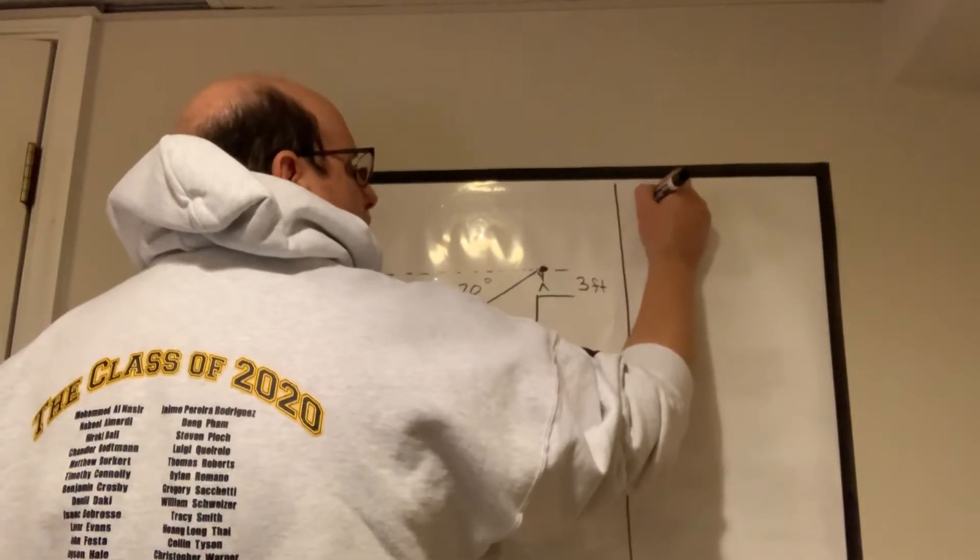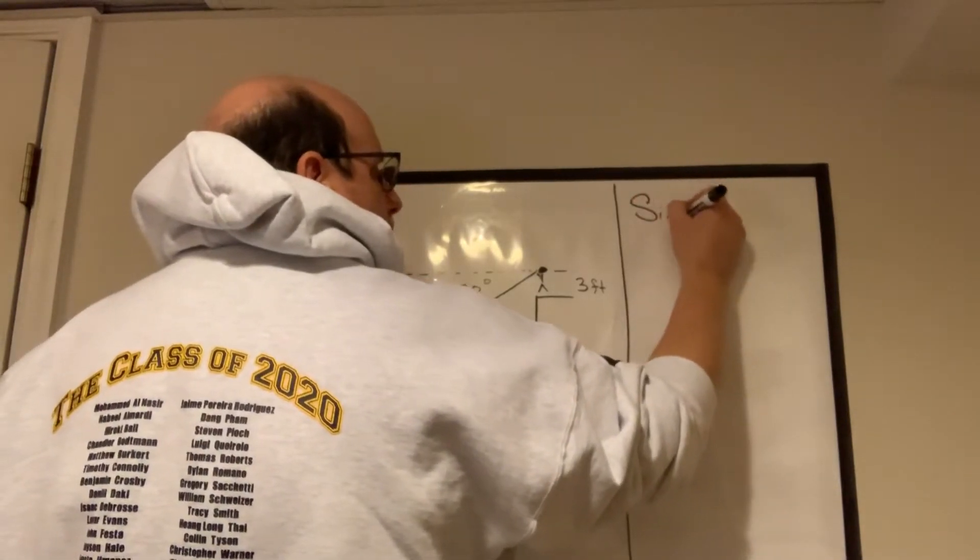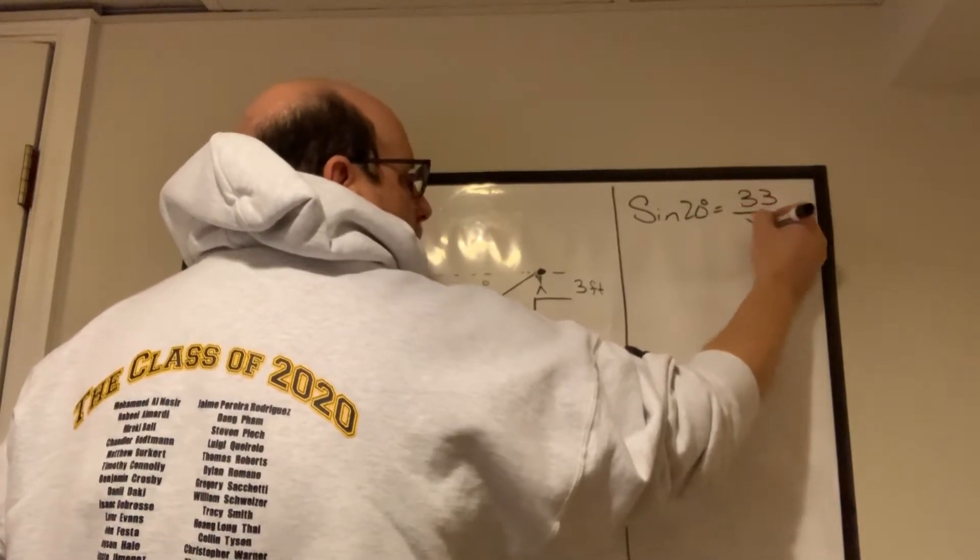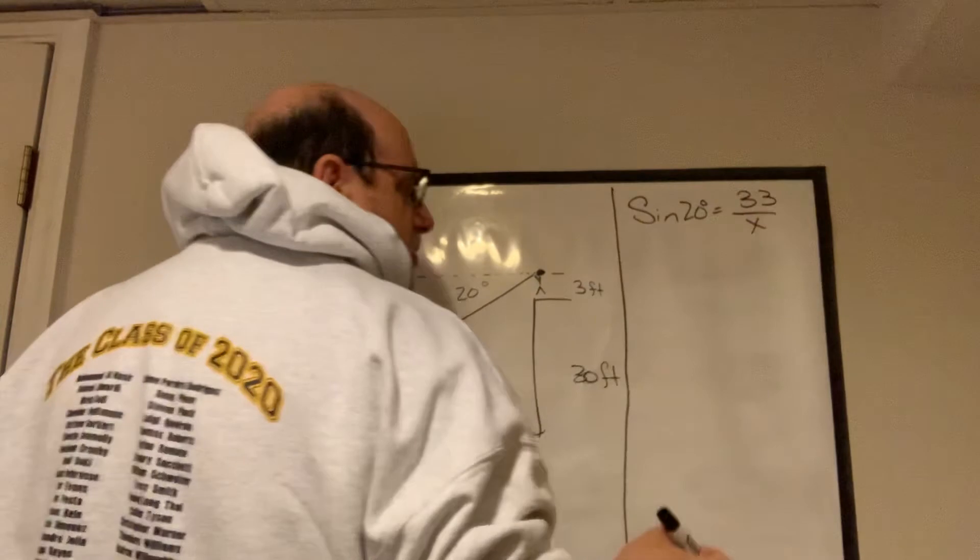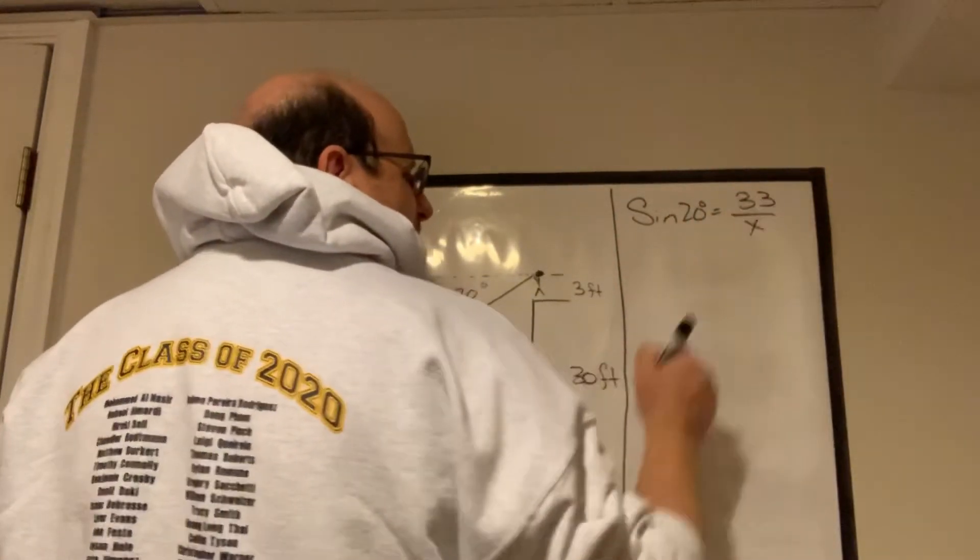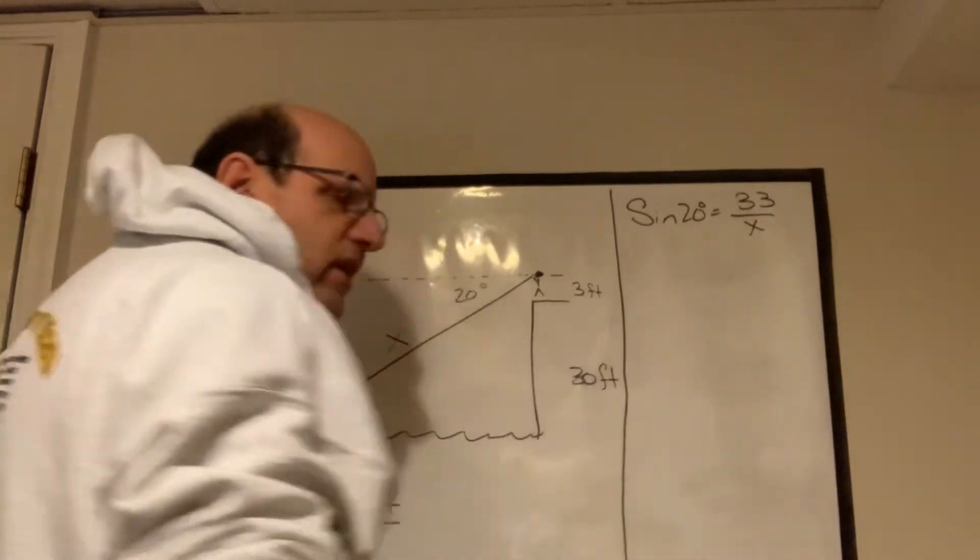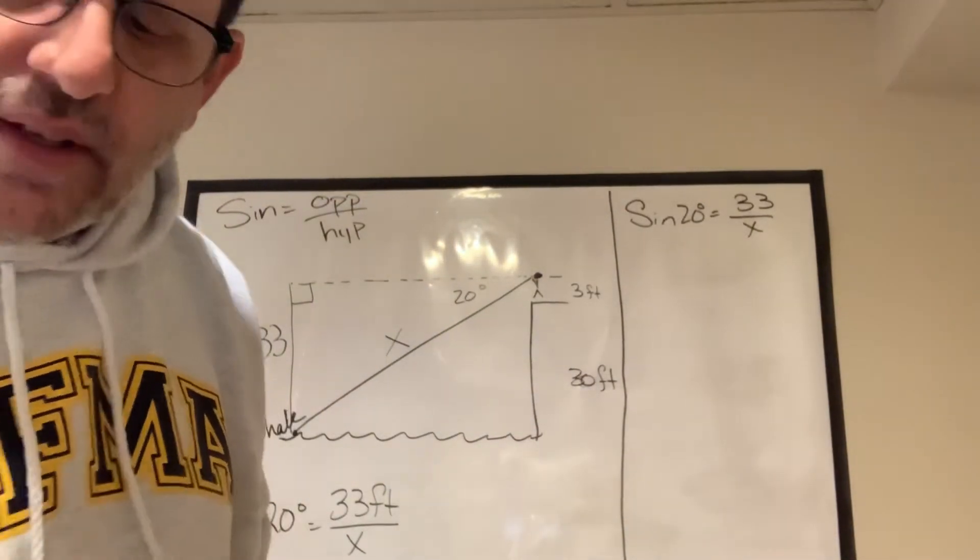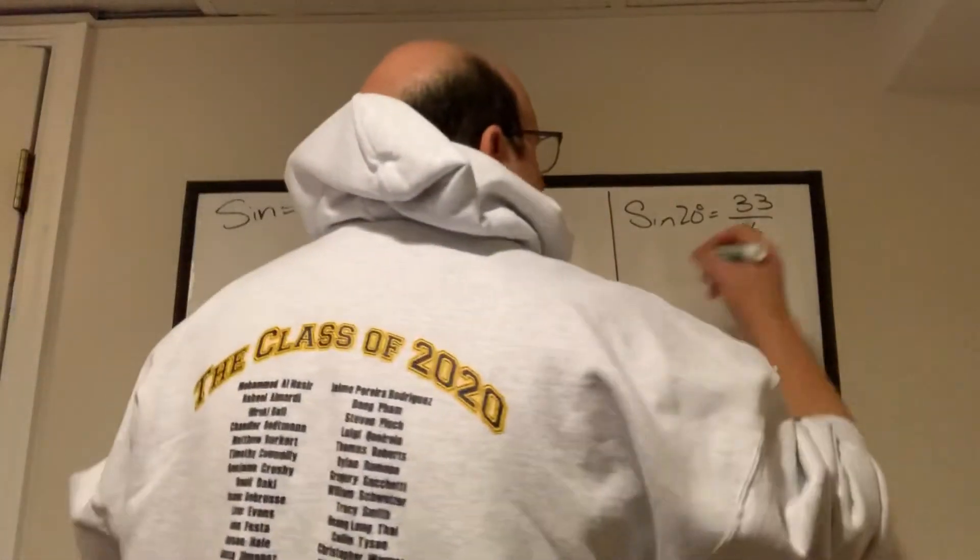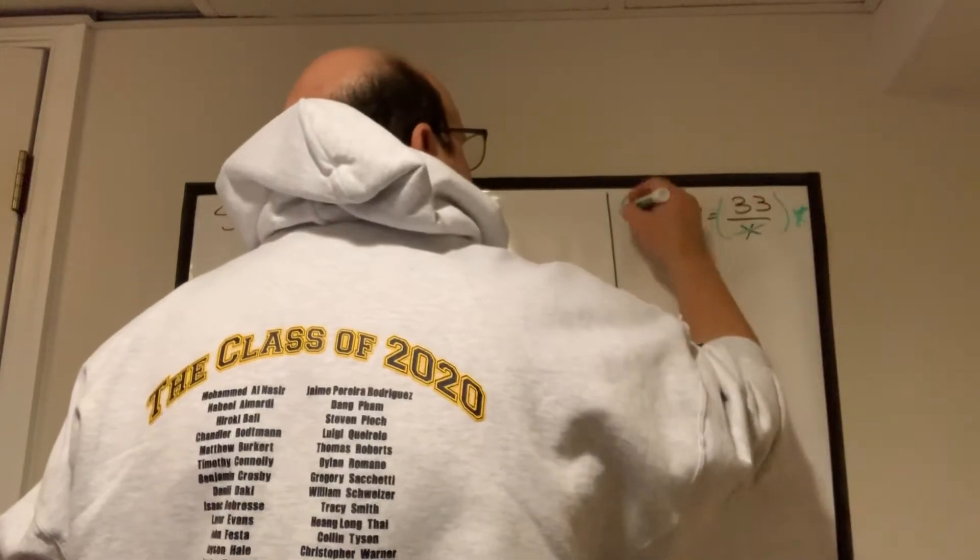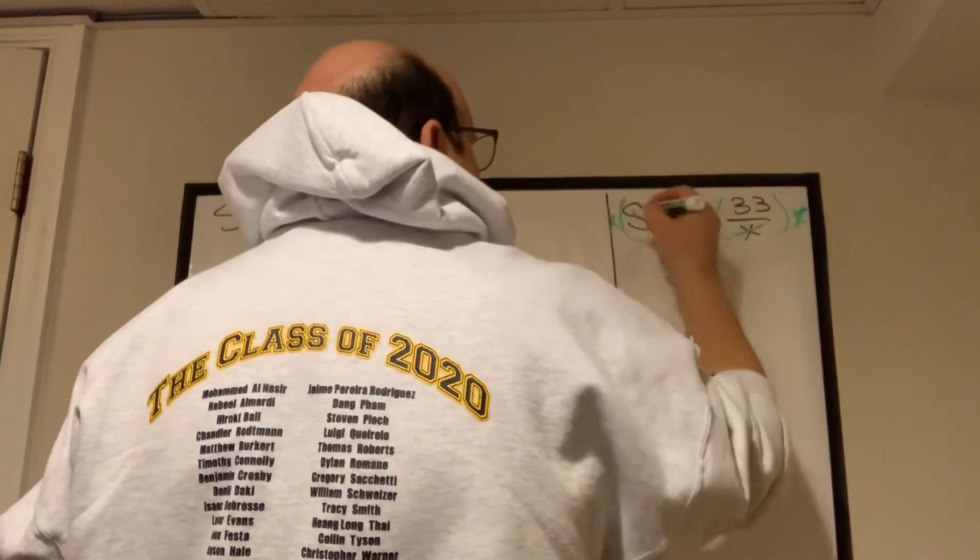I'm going to repeat it. The sine of 20 degrees is equal to 33 over X. Well, how do I get X by itself? I hate X as a denominator. So I'm just going to do some simple math, and I'm going to multiply both sides by X. And that gets rid of the X here.